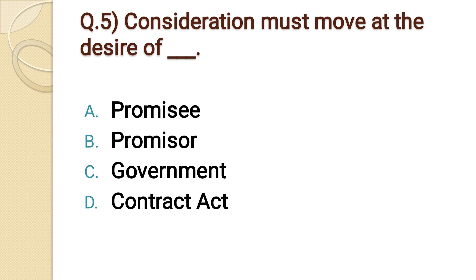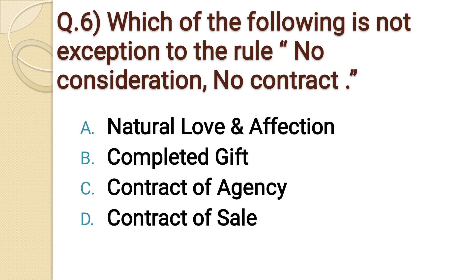Question number five: Consideration must move at the desire of dash dash. Option A: promisee. Option B: promisor. Option C: government. Option D: Contract Act. The correct option is option B: promisor.